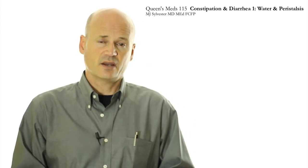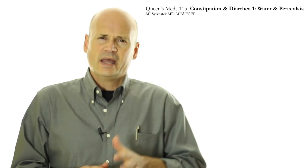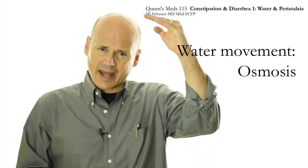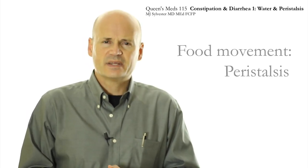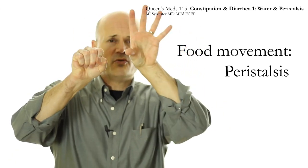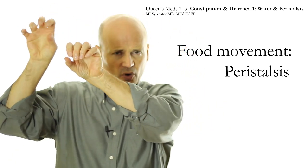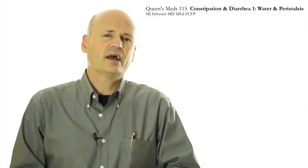We don't need to know all the intricate details of that system in order to understand constipation and diarrhea. There are two things you need to know: one is the concept of how water moves in and out of your intestines by osmosis, and the second is how food and waste matter move along your intestines by a process called peristalsis. Osmosis and peristalsis — understanding those two things will go a long way.